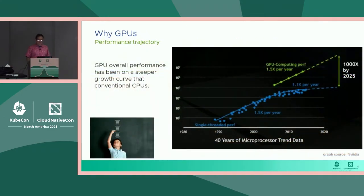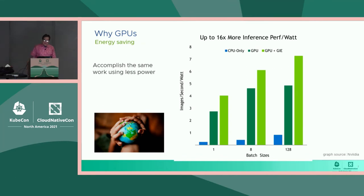Another reason for GPUs: the growth rate in conventional CPUs has been leveling off compared to GPUs. Maybe CPUs are reaching a maturity level and the GPU situation is still young, so they're growing faster. And this isn't just time to result — there are often energy advantages to using GPUs. If you can get the same job done while burning fewer kilowatt hours, it helps the planet.